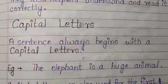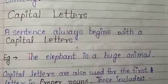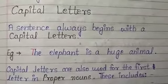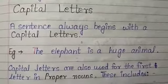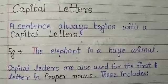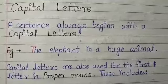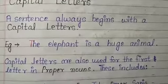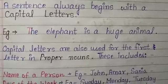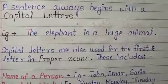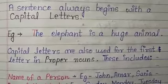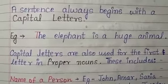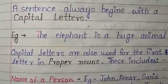Now, we will study about capital letters. A sentence always begins with a capital letter. For example: 'The elephant is a huge animal.' Here, T is the beginning of the sentence, so it is written in capital.